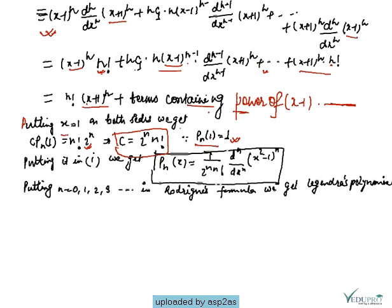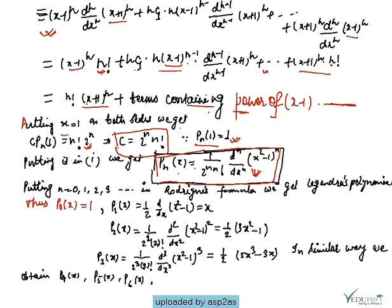Substituting this value of c back into equation 1, we have Pn(x) = 1/(2^n · n!) · d^n/dx^n · (x²-1)^n. This is the required Rodrigues formula. Now using this equation for n = 0, 1, 2, 3, we can compute the Legendre polynomials.